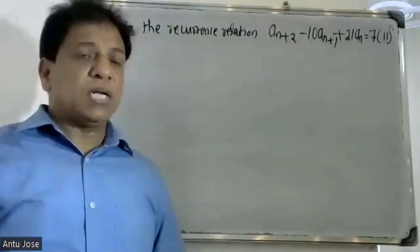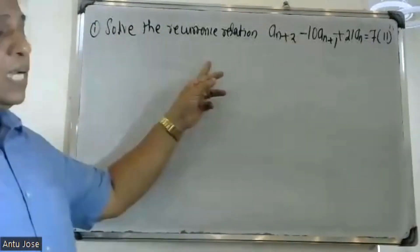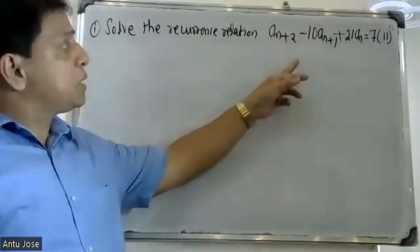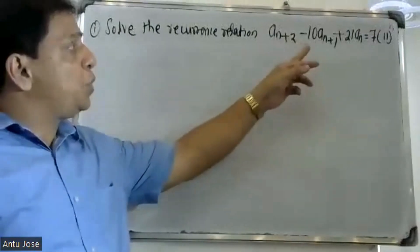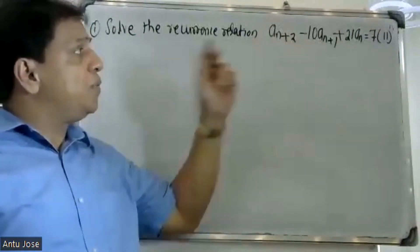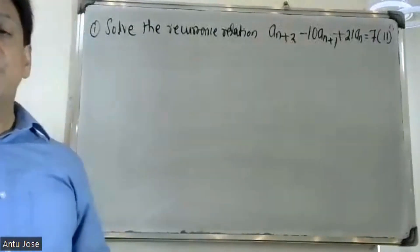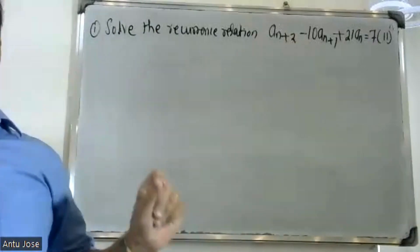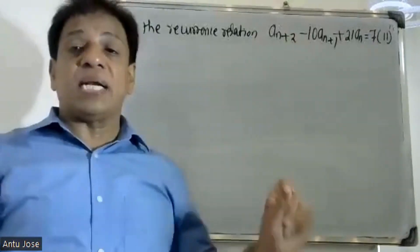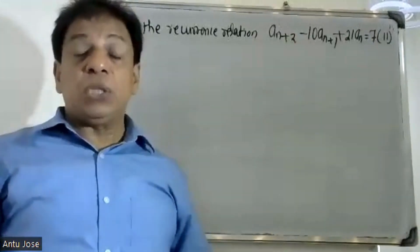Good morning students. The given recurrence relation is: a(n+2) - 10·a(n+1) + 21·a(n) = 7·11^n. This is a non-homogeneous second-order recurrence relation because the right-hand side is not equal to zero.